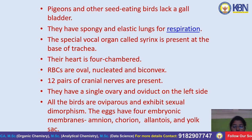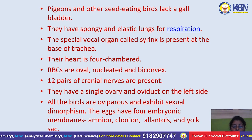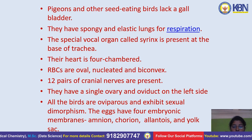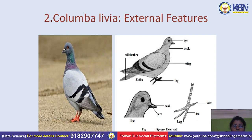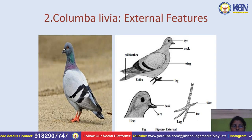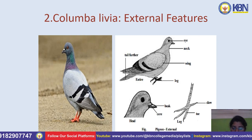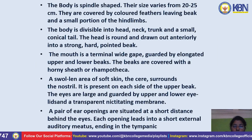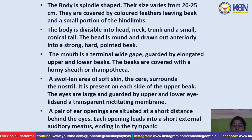All birds are oviparous and exhibit sexual dimorphism. The eggs have four embryonic membranes: amnion, chorion, allantois, and yolk sac. Next topic: Columba livia, the pigeon. External characters — the body is spindle-shaped and their size varies from 20 to 25 centimeters.